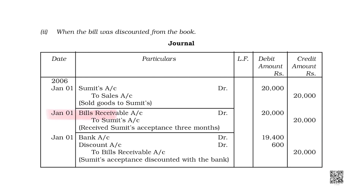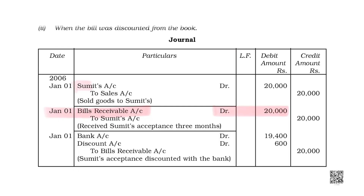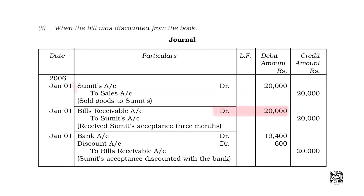Now he received a bill. We have already learnt that when we write a bill of exchange, bill receivable becomes our asset. The way Sumit was my debtor and he was my asset, after writing the bill, bill receivable will become my asset, and Sumit will be off — Sumit is credited.